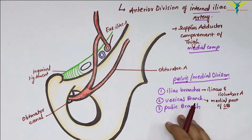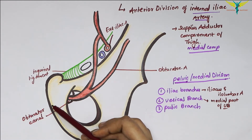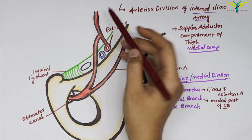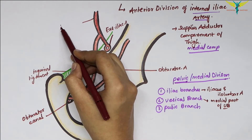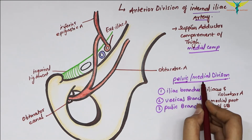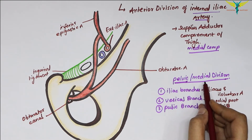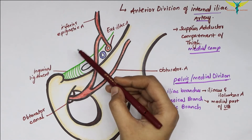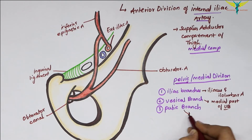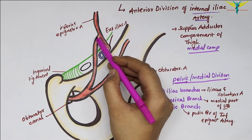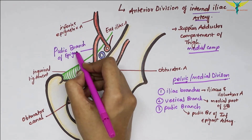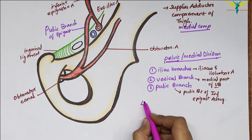The pubic branch runs across the pubic bone and anastomoses with the pubic branch of the inferior epigastric artery. This is the inferior epigastric artery, and the pubic branch of the medial division of the obturator artery anastomoses with the pubic branch of the inferior epigastric artery.